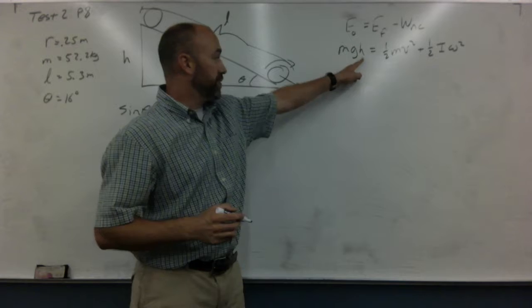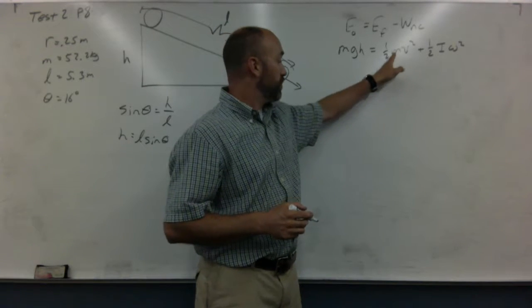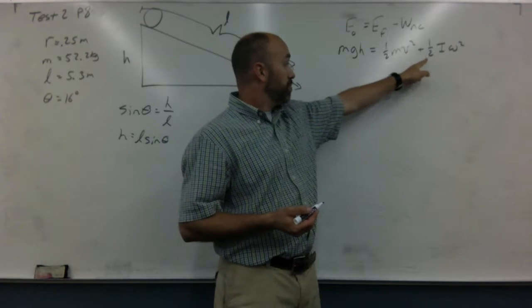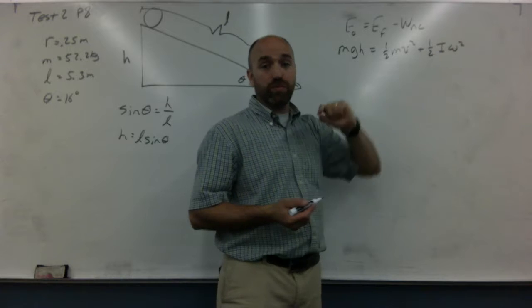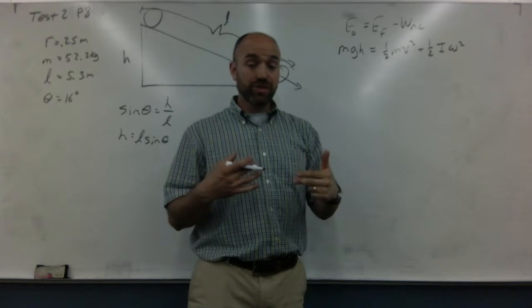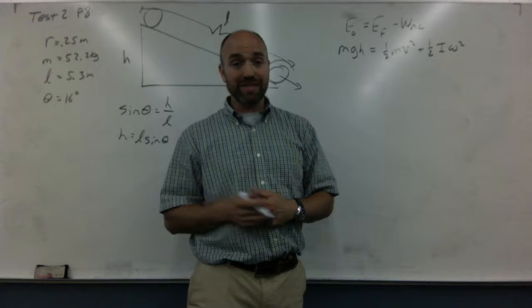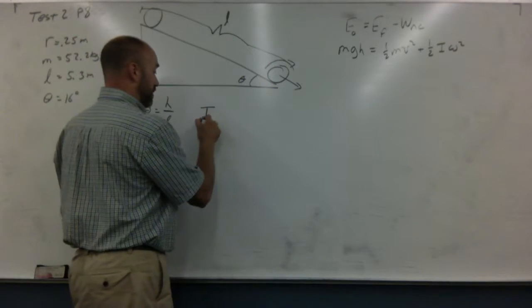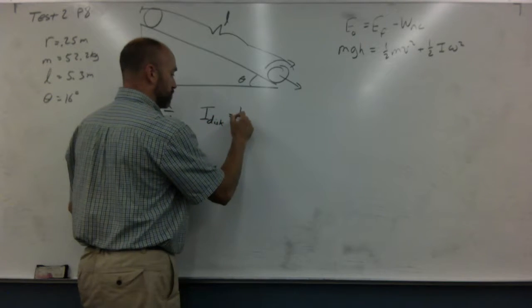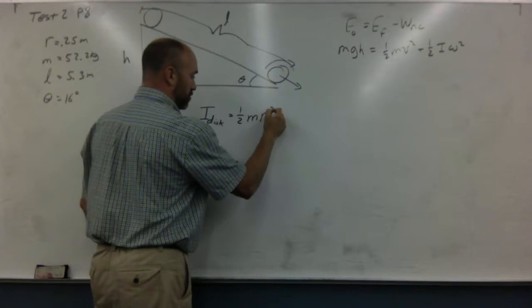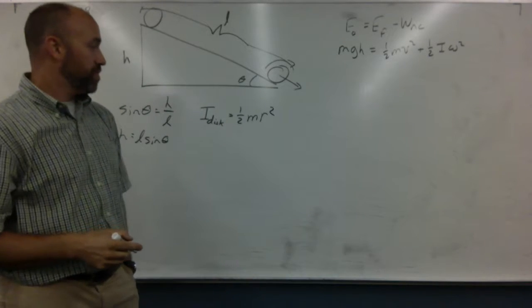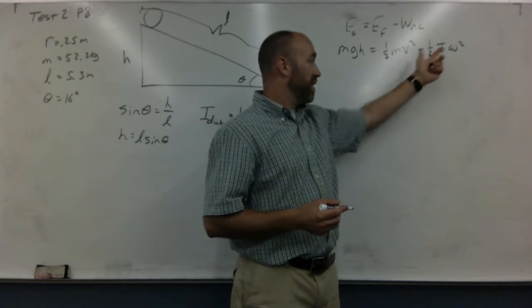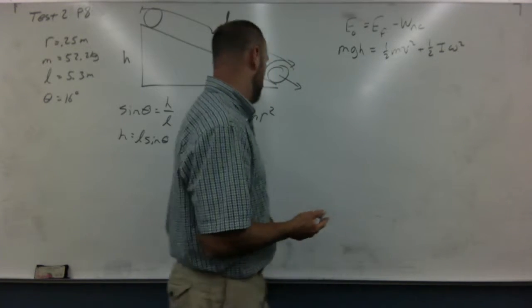So we can plug that in here. One half mv squared. We know m. We're trying to find v. We'll leave that alone. Plus one half i. This is moment of inertia. Now remember this depends on the object that's spinning. In this case we've got a disk. So you look it up on that table that's attached to the equation sheet. And the i for a disk is one half m r squared. The mass of the disk times the radius of the disk. And omega. Well that's the other thing we're looking for. But we can't really have two unknowns in the same equation.